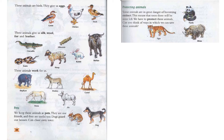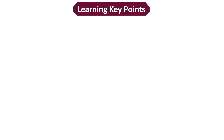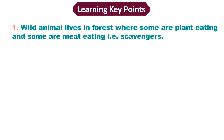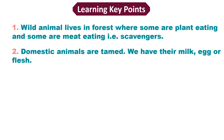That was Chapter 4. Let me summarize the key points we have learned. First, wild animals live in forests where some are plant-eating, some are meat-eating, and some are known as scavengers — eating plants, other animals, or dead animals respectively. Second, domestic animals are tamed, and from them we get milk, eggs, or flesh.